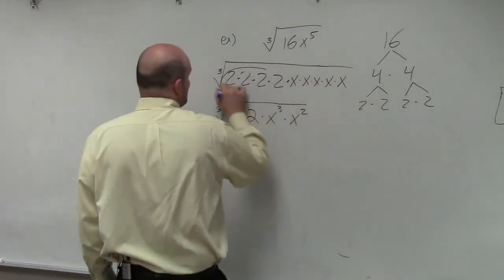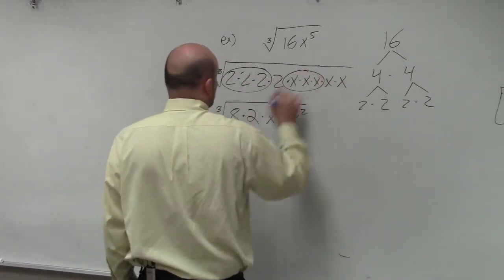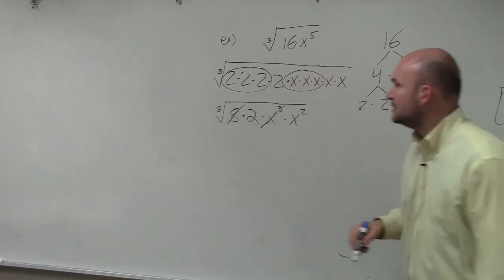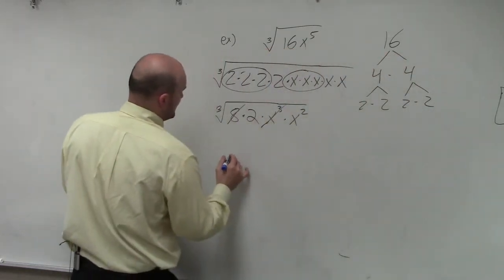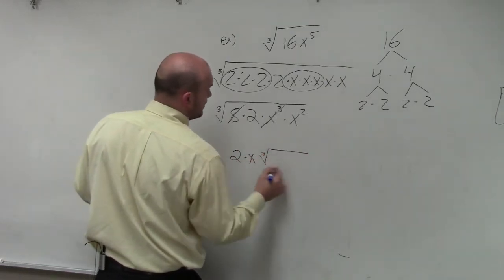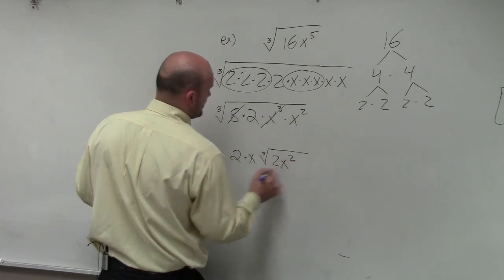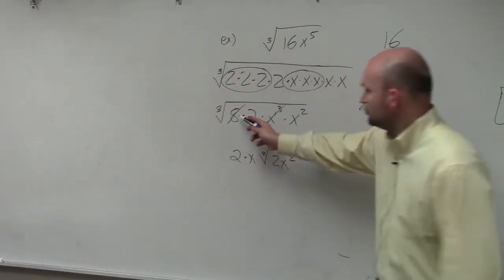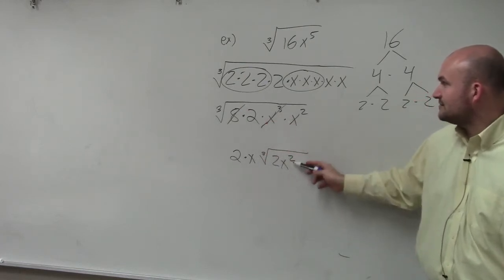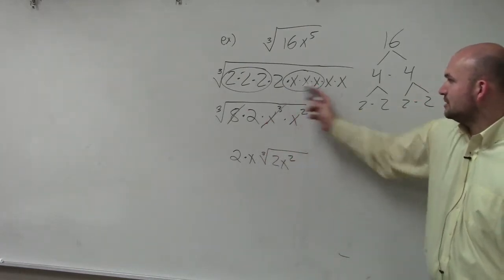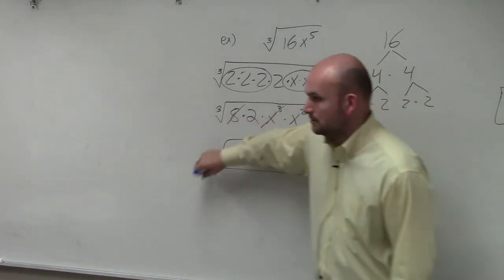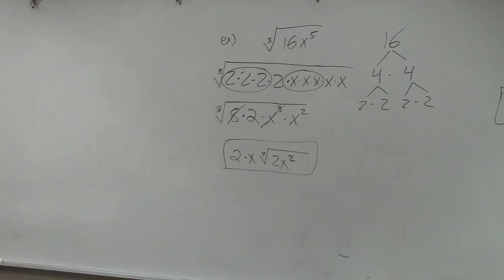Now I take out my groups of 3. I take the cube root of 8 and the cube root of x cubed. This pulls out to give me 2 times x times the cube root of 2x squared. The cube root of 8 is 2, the cube root of x cubed is x, and 2x squared is left inside. Does everybody see that? Any questions?